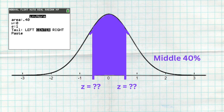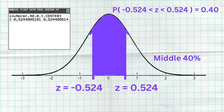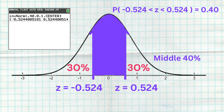In this last example, we're looking at the middle 40% and want to know what Z-scores represent it. We go to invNorm, type in an area of 0.40, and select center. That gives us two Z-scores — notice they're the same absolute value, one positive and one negative because of symmetry. We get a Z-score of negative 0.524 to a Z-score of positive 0.524, and in between those two Z-scores represents 40% of the data. With 40% in the middle, there's 60% left out — 30% to the bottom and 30% to the top because of symmetry.